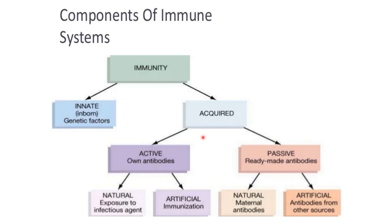Acquired immunity is divided into active or passive. Active immunity is when the body produces its own antibodies. Passive immunity involves ready-made antibodies transferred into the body — antibodies are produced in another body.